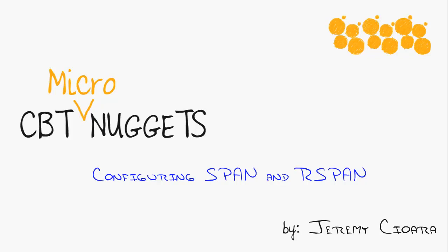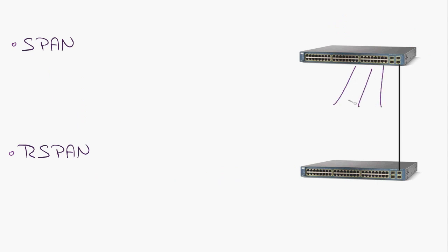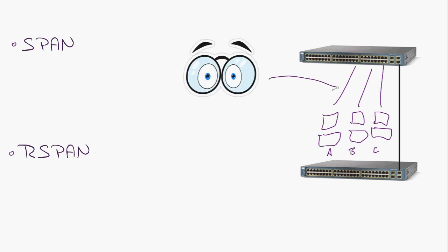How to configure SPAN and R-SPAN on a Cisco switch — the Micronugget. Every switch, out of the box, isolates devices into their own collision domains. That means those devices can only see traffic that's sent to and from them, as well as some broadcast traffic. But oftentimes, as a network administrator, we want eyes into the network to see what's really going on. Cisco allows us to configure SPAN sessions — Switch Port Analyzer sessions.